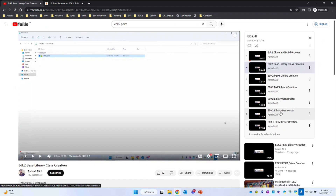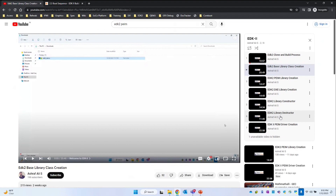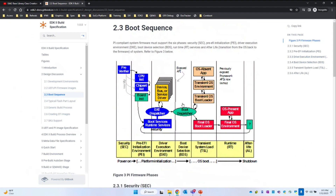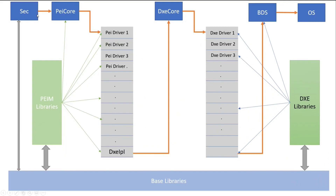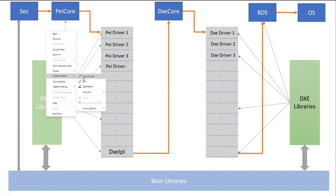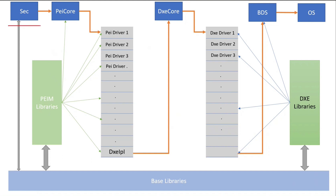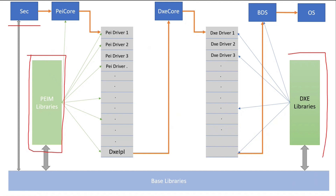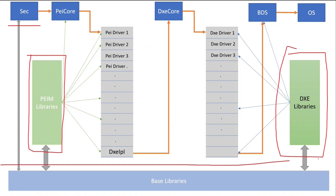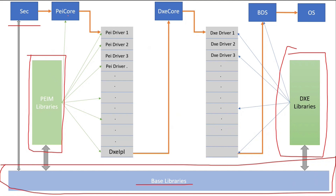In previous discussions I showed how to create library classes — either base, PEI, or DXE — and constructors, destructors, as well as PEI drivers. During this entire boot phase, where are these going to be used? In the block diagram, you can see we have the SEC phase, split into three boxes: the PEI libraries, the DXE libraries, and the base libraries.